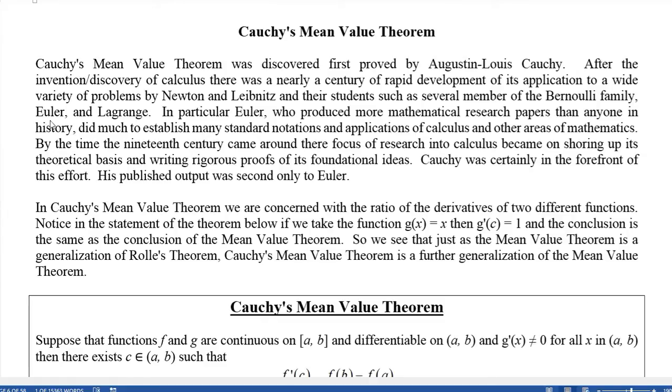In particular, I want to single out Euler (E-U-L-E-R), that's pronounced Euler, who produced probably more mathematical research than anyone in history. If you go by just volume, number of pages of mathematical things he's published, number of papers, there's nobody else that really even comes close to him.